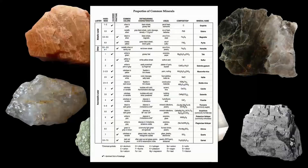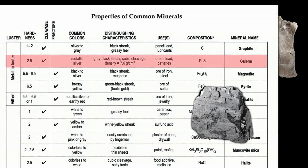Let's take a look at the New York State Earth Science Reference Tables — this is the properties of common minerals chart. Here's the column for galena. From left to right, it tells us it has a metallic luster, it's very soft with a hardness of only 2.5, it displays cleavage and a metallic silver color, has a gray-black streak, is very dense, is used as an ore of lead and in batteries, and is composed of lead and sulfur.